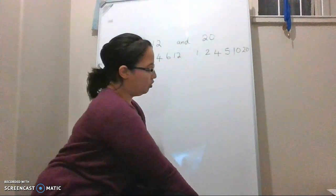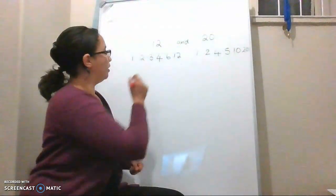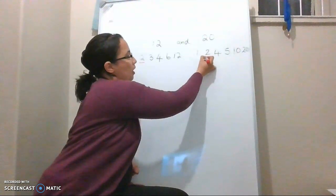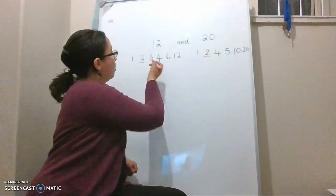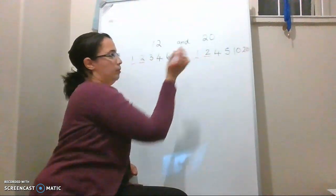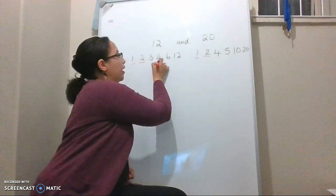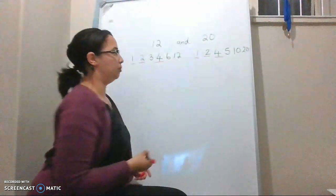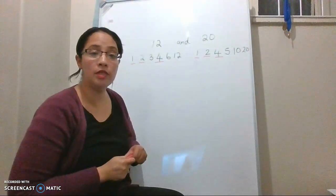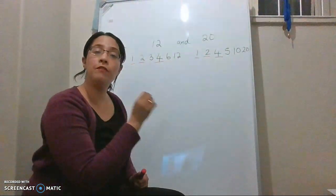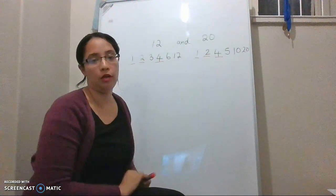Now, we're going to identify the common numbers. We've got a 2 there and a 2 there. We've got a 1 and a 1, and we also have a 4 and a 4. These are all the factors that are common between 12 and 20.